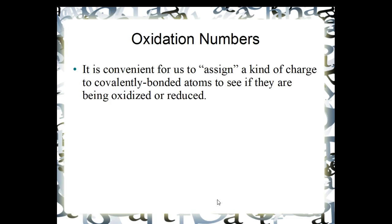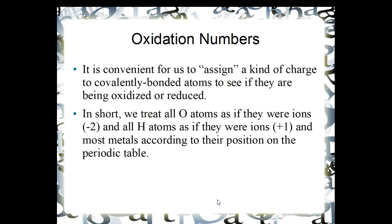The assignment of oxidation numbers: It's convenient for us when we're working with molecular compounds to assign a kind of charge to covalently bonded atoms to see if they're being oxidized or reduced. This is an accounting trick that we use. In short, we treat all oxygen atoms as if they were ions with a minus two charge and all hydrogen atoms as if they were ions with a positive one charge.